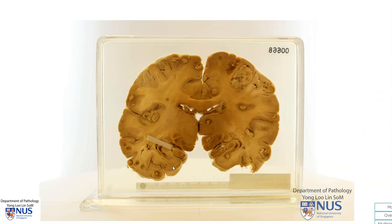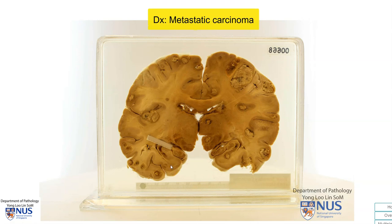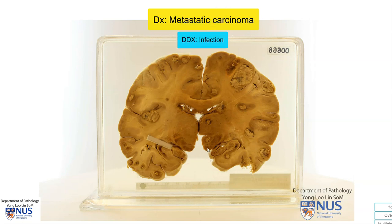The diagnosis here is metastasis to the brain, or metastatic carcinoma to the brain. The differential diagnosis for these multiple masses in the brain would include mostly infective causes, for example parasitic infections or bacterial infections, and of course the past history and current clinical picture would be very important.